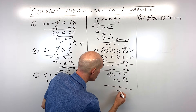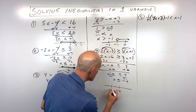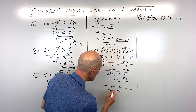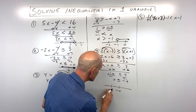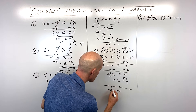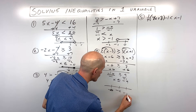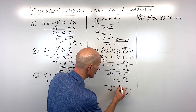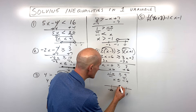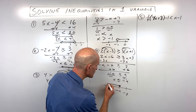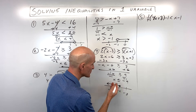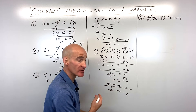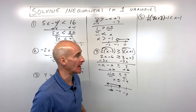On the number line, here's negative 9, negative 10 over here, and negative 8 over here. x is less than or equal to negative 9, so it includes negative 9 as well as all the values less than, or to the left of, negative 9.